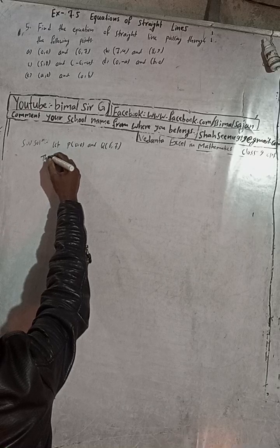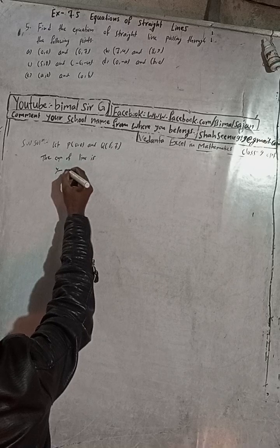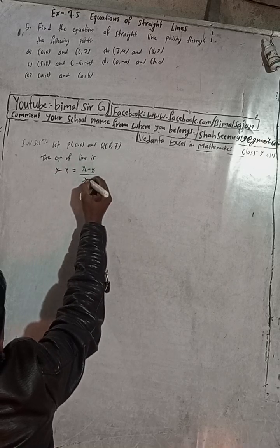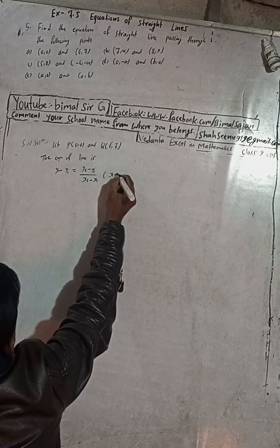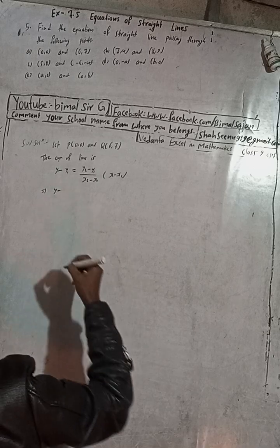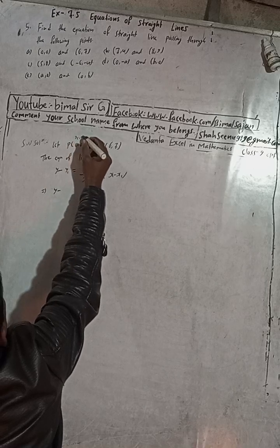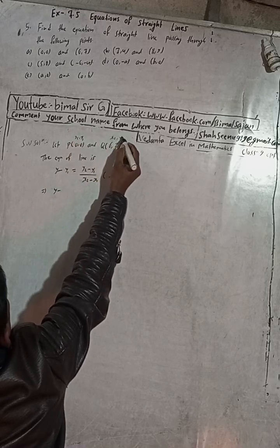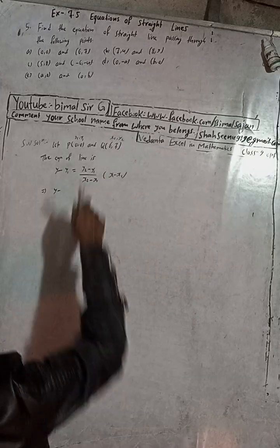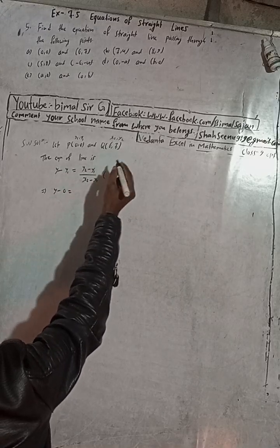The equation of the line is: y minus y1 is equal to (y2 minus y1) divided by (x2 minus x1), multiplied by (x minus x1). Here x1, y1 and x2, y2 are our two points. So y1 is 0, and y2 is 7.